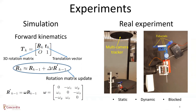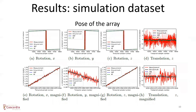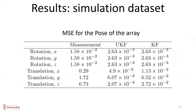Here are the simulation results for the position of the fiducials. The first row shows the whole temporal domain, and the second row shows a magnified view of the performance. It is clear that both Kalman filter and unscented Kalman filter substantially reduce the measurement noise. Similarly, the simulation results for the pose of the array — characterized by a rotation vector and a translation vector — show that both filters substantially stabilize the temporal performance. Quantitatively, the Kalman filter reduces the mean squared error for the pose by more than a factor of 10.